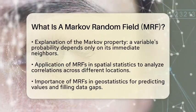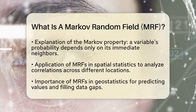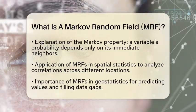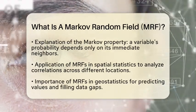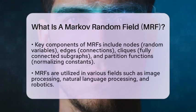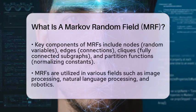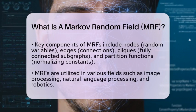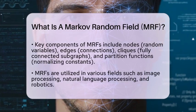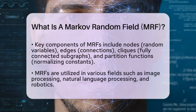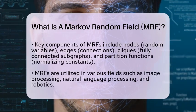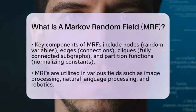The structure of an MRF consists of several key components. First, we have the nodes, which represent the random variables. Then there are edges, which are the connections that indicate direct relationships between these variables. A clique is a fully connected subgraph that helps define the probability distribution, while the partition function is a normalizing constant ensuring that the probabilities sum to one.